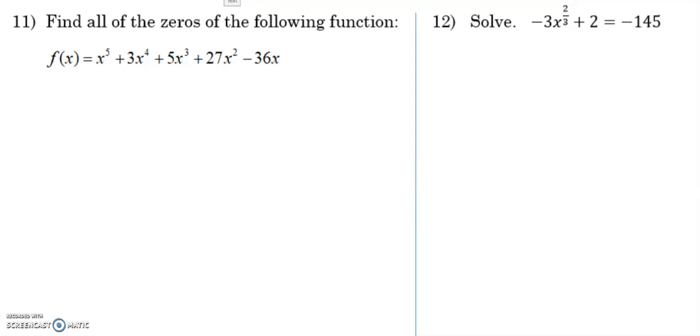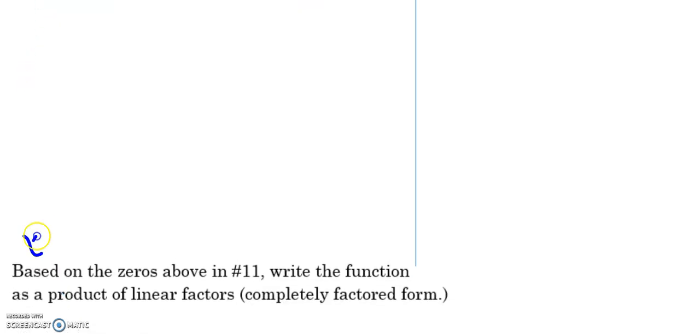We're going to continue our work on cumulative review number 8 by looking at problem 11. Find all of the zeros of the following function. So hopefully you're looking at this and saying I'm looking for a total of 5 zeros. And I notice that I can factor out an x from the very beginning. So x to the 4th plus 3x to the 3rd plus 5x squared plus 27x minus 36. In which case this x right here is causing a 0 at 0.